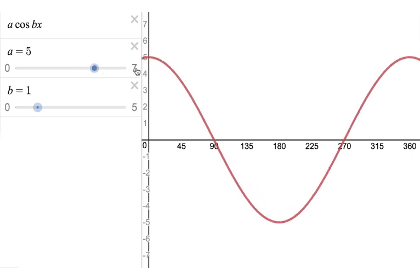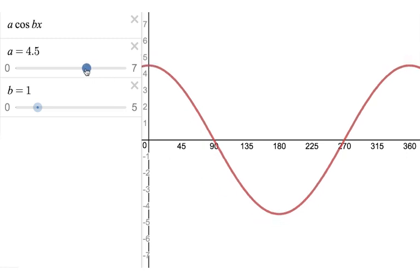Now as you can see instead of starting off at 1 it now starts off at 5. So this number at the front tells you the amplitude of the cosine graph.